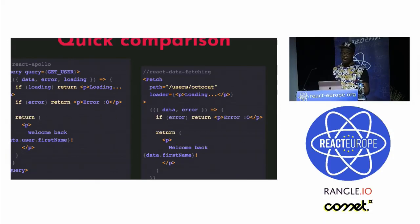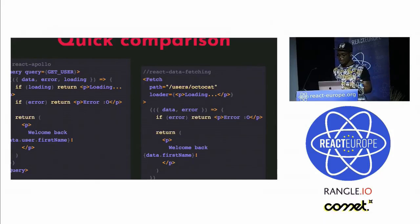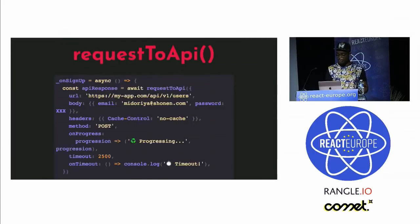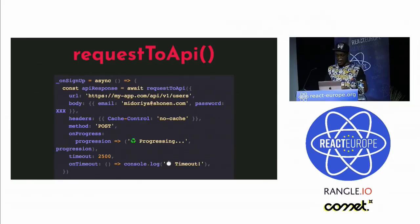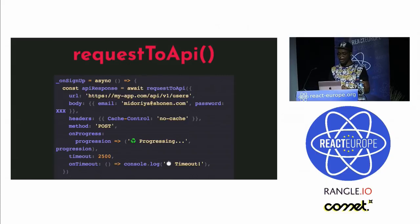You have access to the same loading, error, and data variables even if they rely on two completely different query languages, which I find really awesome. The library gives you access to a lot of props to handle different use cases, but if you need a good old function to do the job, you also have access to the requestToAPI function — which, against all odds, performs a request to an API. It accepts a single object as an argument and you just pass all the parameters you need.